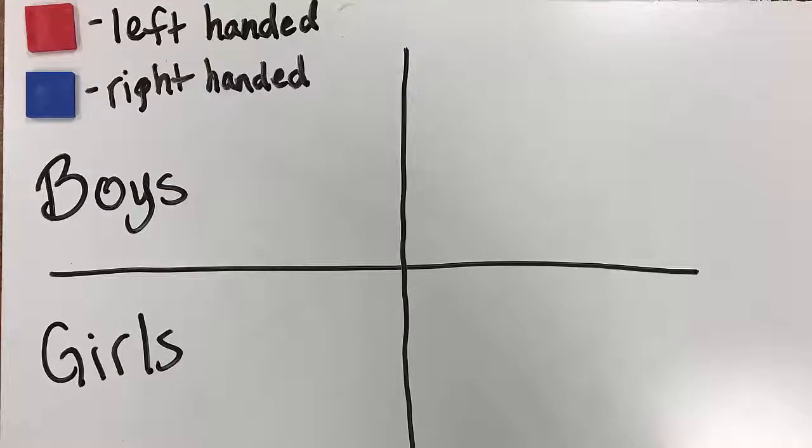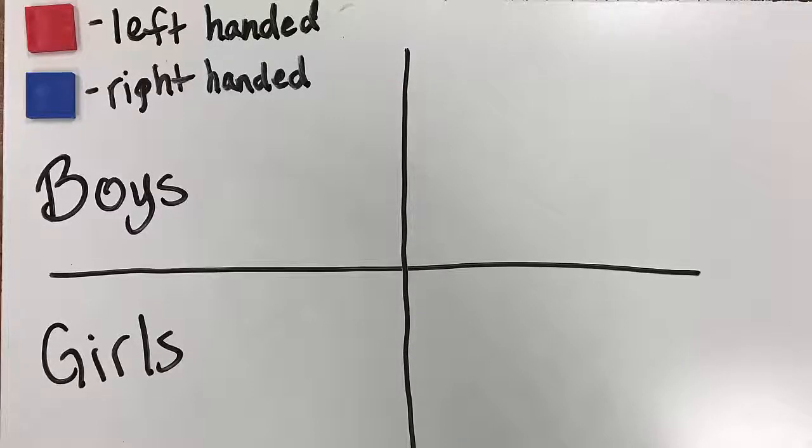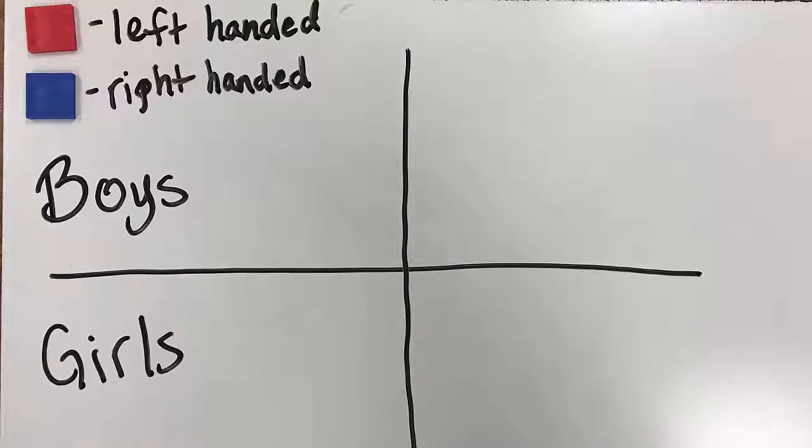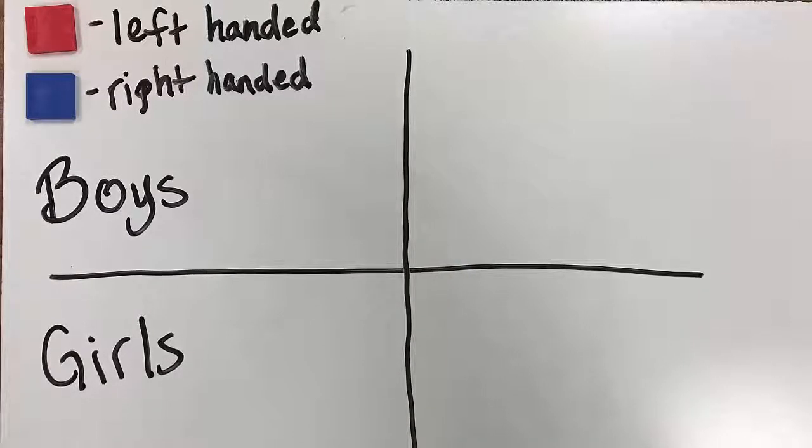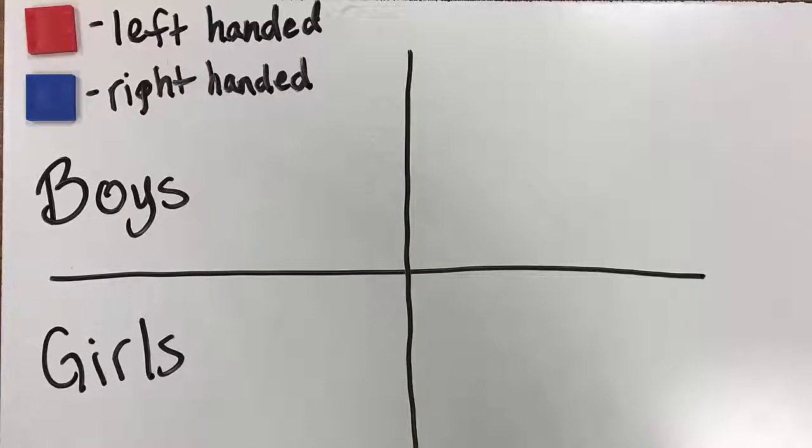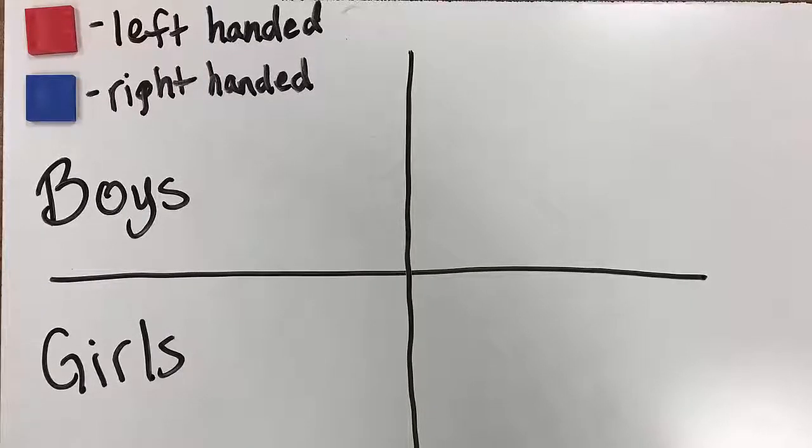In this example, students within a class have been polled to determine how many boys are right-handed, how many girls are right-handed, how many boys are left-handed, and how many girls are left-handed. Notice how they have assigned a label for each color tile.